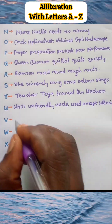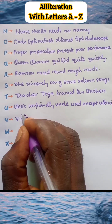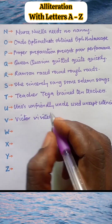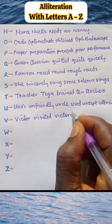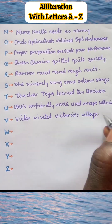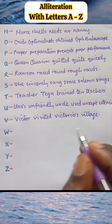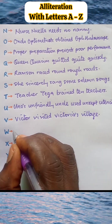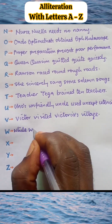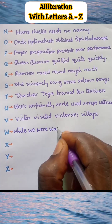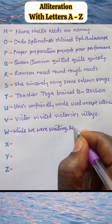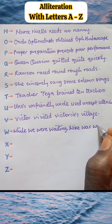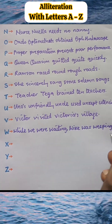Alliteration V: Victor visited Victoria's village. Alliteration W: While we were waiting, Wiki was weeping.